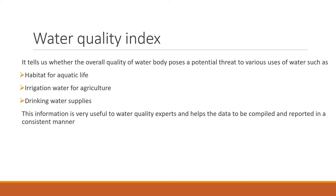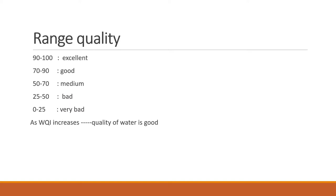We can decide whether water can be used for agriculture, aquatic life, or drinking — this is basically the criteria for the water quality index. The water quality index range varies: if it is between 0 to 25 or 25 to 50, the water quality is not good and cannot be used for drinking. If it is between 90 and 100, it is good quality water fit for drinking. Giving a water quality index to a water sample helps us understand whether that water is fit for human consumption.